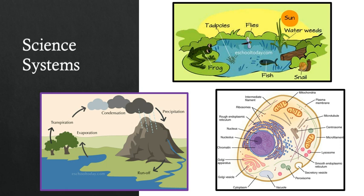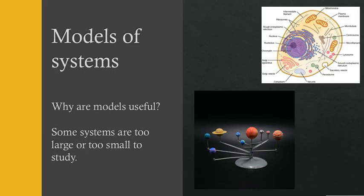Now in science, sometimes systems are extremely small like this animal cell or extremely large like this solar system. And so when that happens, in order to study these systems, it's always good to create a model. So models are useful because there are some systems that are just too small or too large to observe.